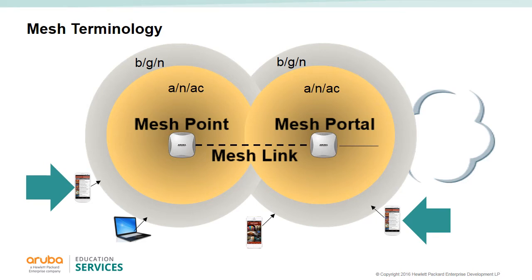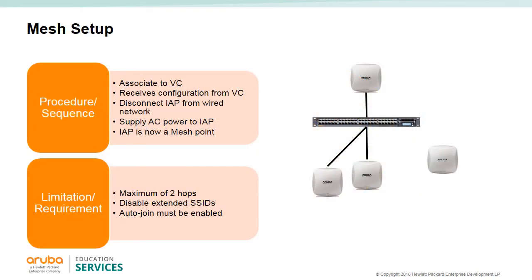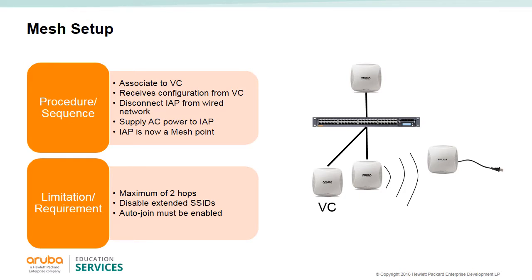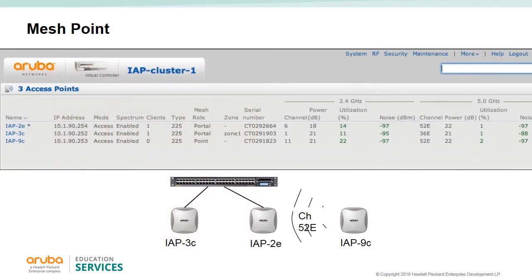Wireless LANs can also be configured on the 5 GHz band, giving client access. All IAPs will show up on the virtual controller. To create a mesh point, the IAP must first join the virtual controller group. By disconnecting the IAP from the network, it will automatically become a mesh point and start looking for a mesh portal in its cluster. The IAP mesh only supports two hop counts. The extended SSID option must be disabled, which reduces supported SSIDs from 16 to 6. The auto-join feature must be enabled and is on by default.